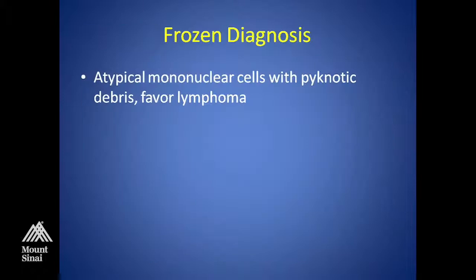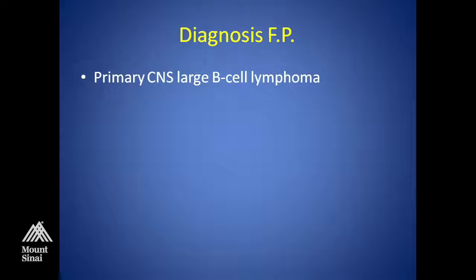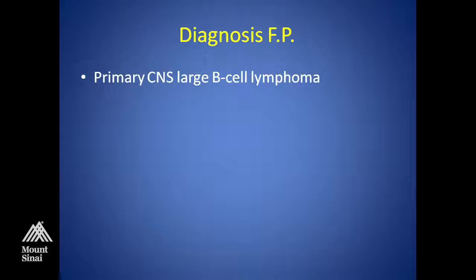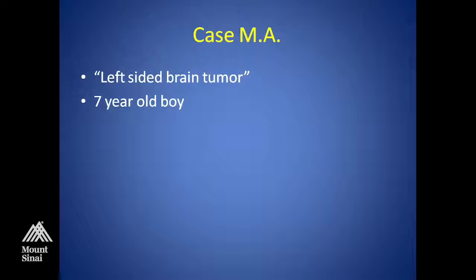On frozen, this was called atypical mononuclear cells with pyknotic debris, favor lymphoma. You've got to be careful because some high-grade gliomas can look similar. Here's the radiology, and this was a primary CNS large B-cell lymphoma. Next case: a 7-year-old boy with a left-sided brain tumor. I'm deliberately not showing the radiology so you can get an assessment of the cells without a clue from the imaging.